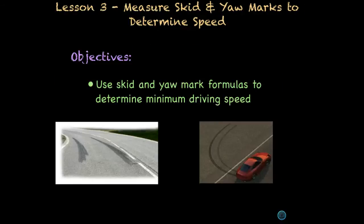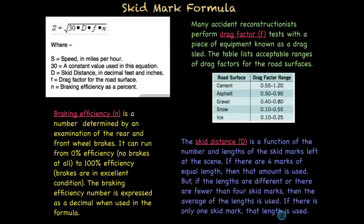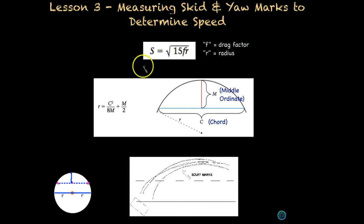This concludes our lesson on measuring skid and yaw marks to determine speed. So at this point, to summarize, you should have this formula in your notes and an explanation of what the d, f, and n mean. Also, be able to work backwards to find the skid distance if you know the speed by squaring both sides. Finally, make sure you have this equation written down in your notes for yaw marks. In addition to that, you need to have this equation written down in order to determine the radius, so that you can plug it into the equation to determine speed if you have yaw marks.